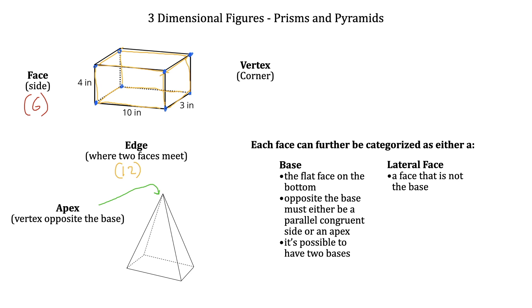Looking at the top shape, we've got the flat part on the bottom and a matching opposite flat rectangle that is parallel — a congruent matching side on the opposite side. For the lower shape, that flat part at the bottom does not have a matching side on the other side, but it does have an apex. If the triangular shape was tilted on its side, we'd turn it upright to identify the actual base. Every other side would be a lateral face. For the top shape, we have two bases and four lateral faces; for the bottom one, we have one base and four lateral faces.